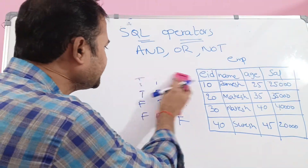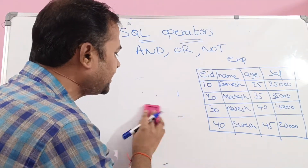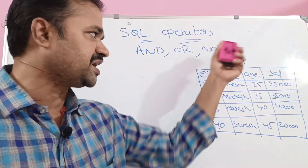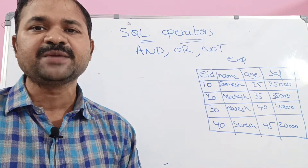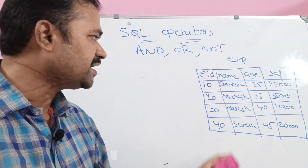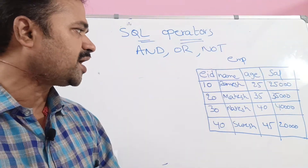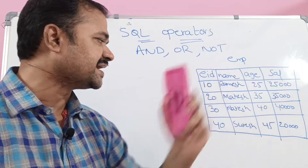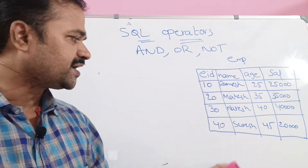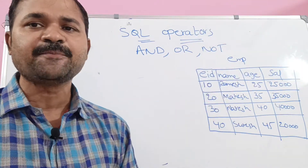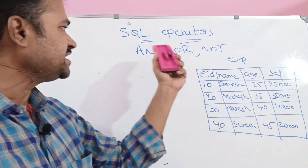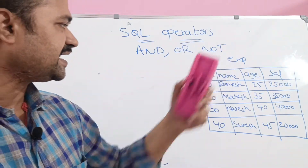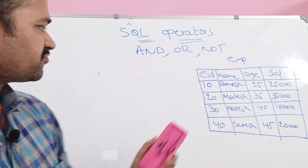Now let us discuss AND, OR, and NOT with the help of the EMP table. The EMP table contains four columns: Employee ID, Name, Age, and Sal. We have four records present in the Employee table. First, let us see the AND operator.